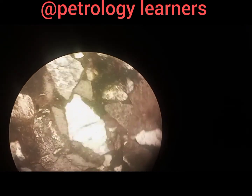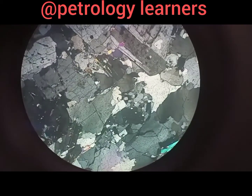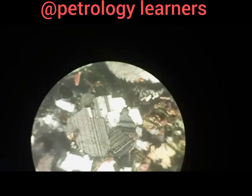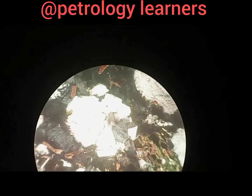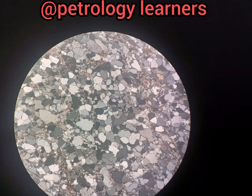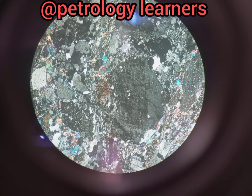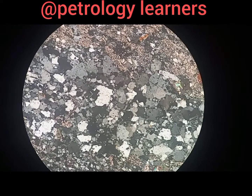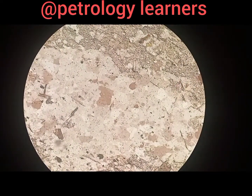Plagioclase and feldspar have almost the same interference color and relief as quartz, but they can be differentiated because plagioclase and feldspar have twinning surfaces, whereas quartz is untwinned. The surface of quartz is clear and unaltered, while feldspar and plagioclase contain inclusions and their surfaces are altered.